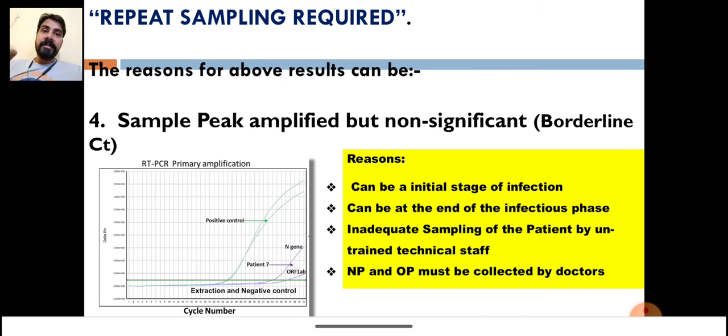What are the reasons for borderline CTs? It might be possible that the technician who is collecting your sample has not collected very well—they just superficially collected the sample, and the actual viral load which needs to be in the sample was not there.